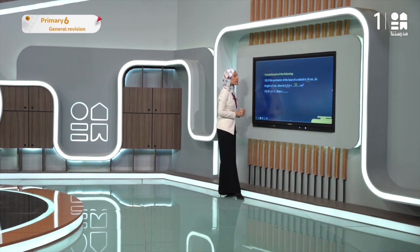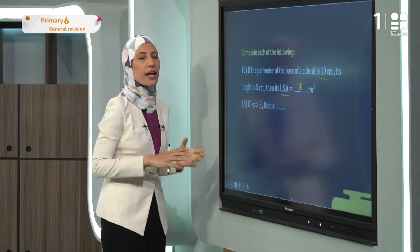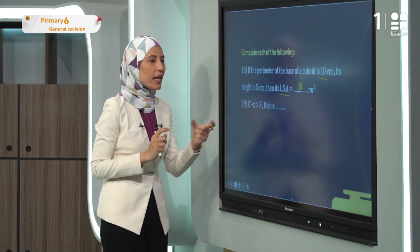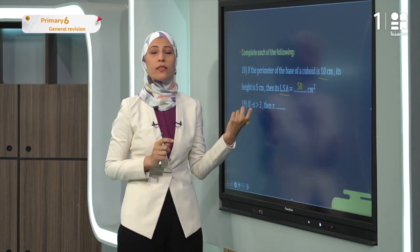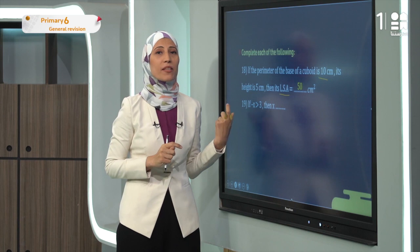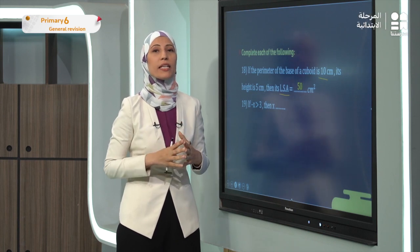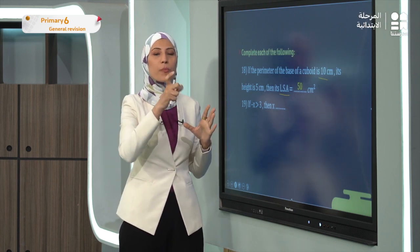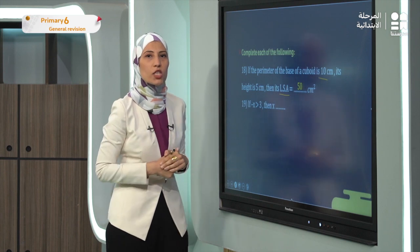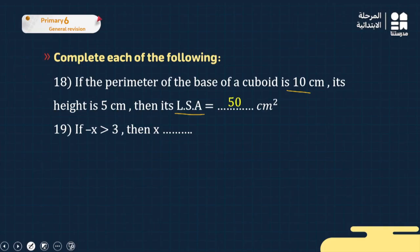Exercise nineteen: if -x > 3, find x. When you have a negative x in an inequality, divide both sides by -1, which switches the direction of the inequality sign. So x < -3.